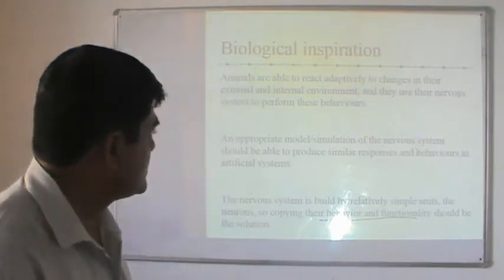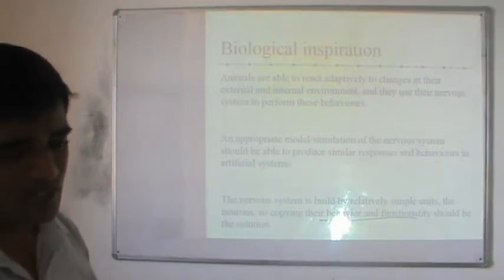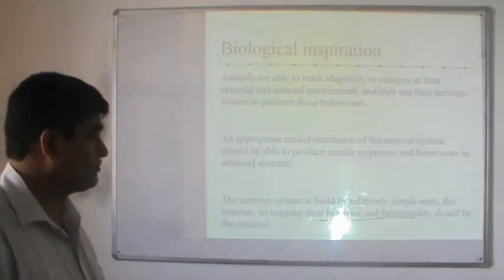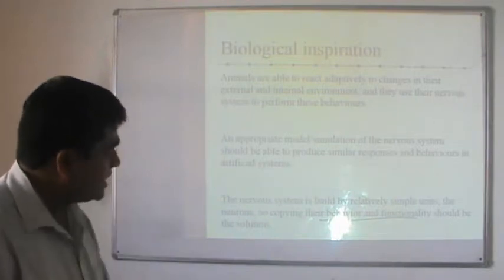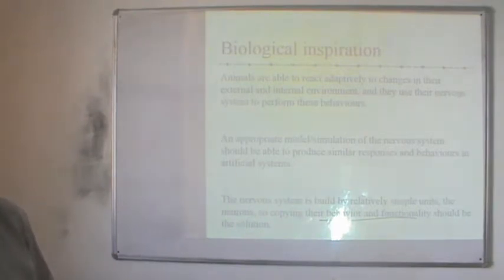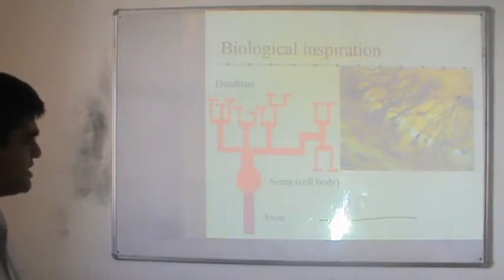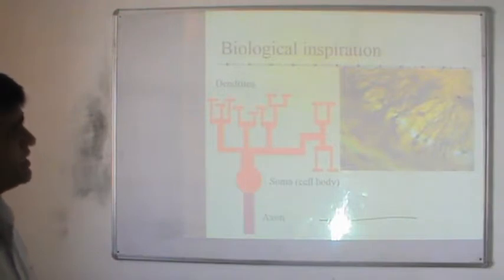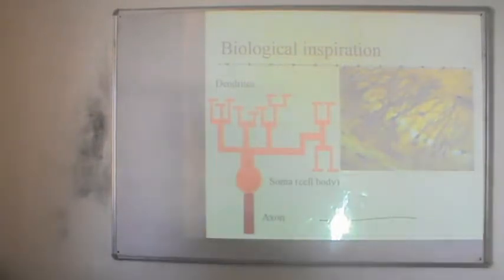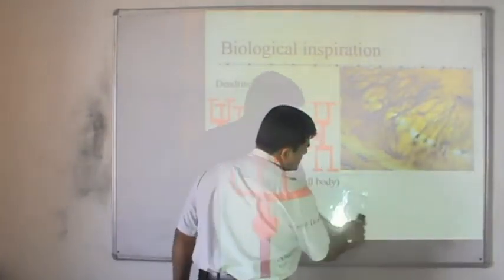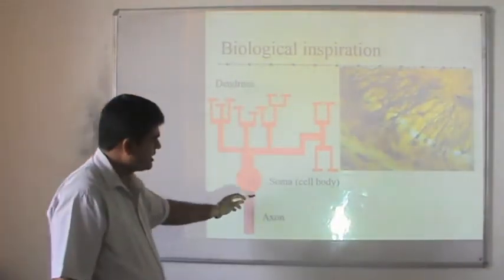What is the biological inspiration? For example, the adaptability of human beings to their surroundings is the best, and we expect similar expectations from neurons in artificial neural networks. The structure of a neuron is made up of dendrites, soma — the cell body — and axon. This is the biological inspiration: the neuron is made up of soma, axon, and dendrites.